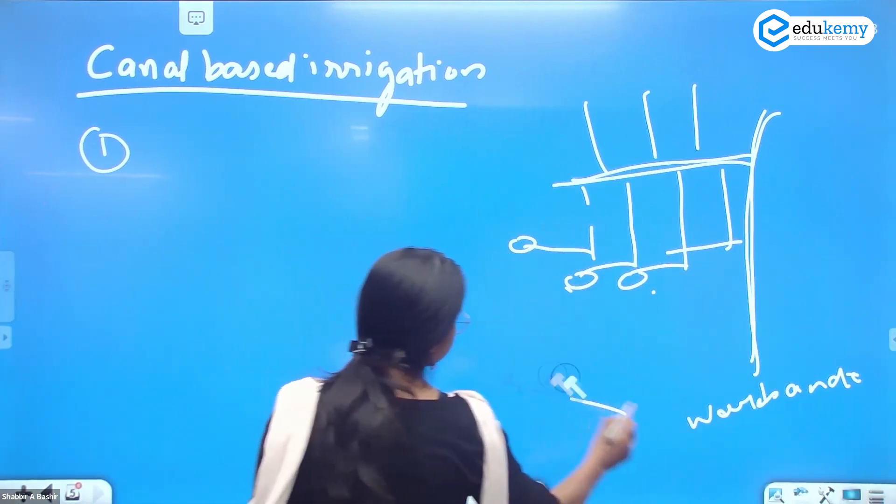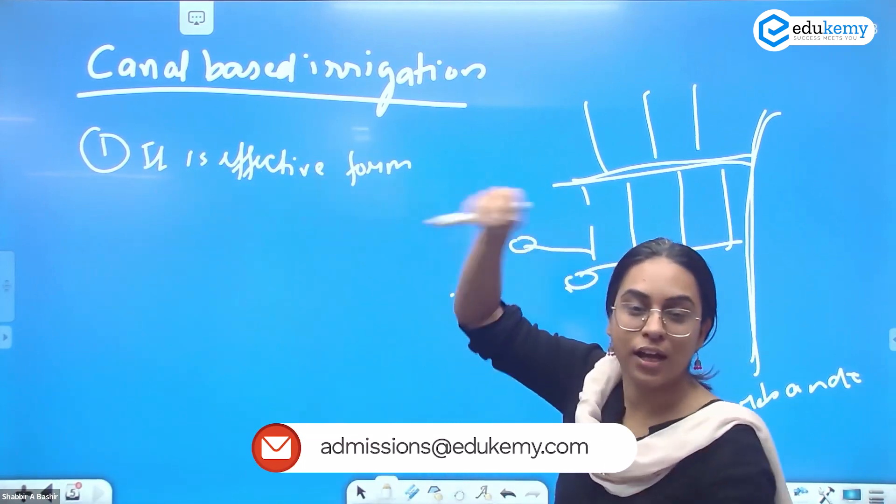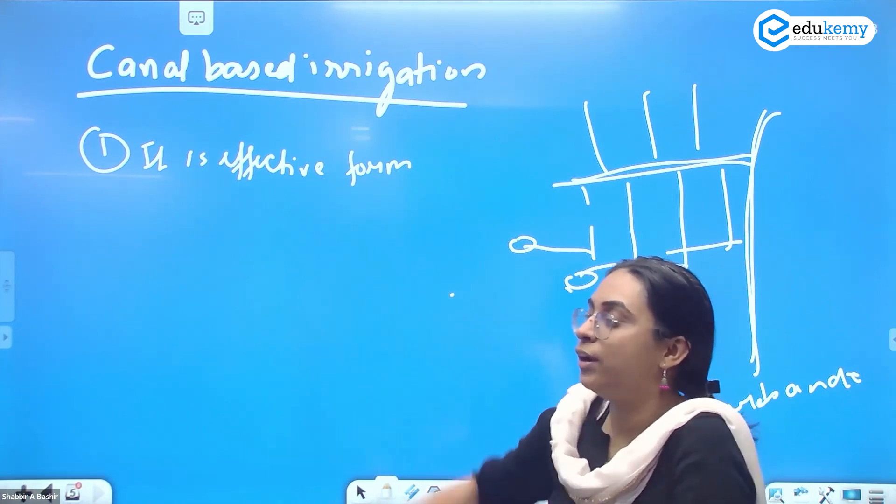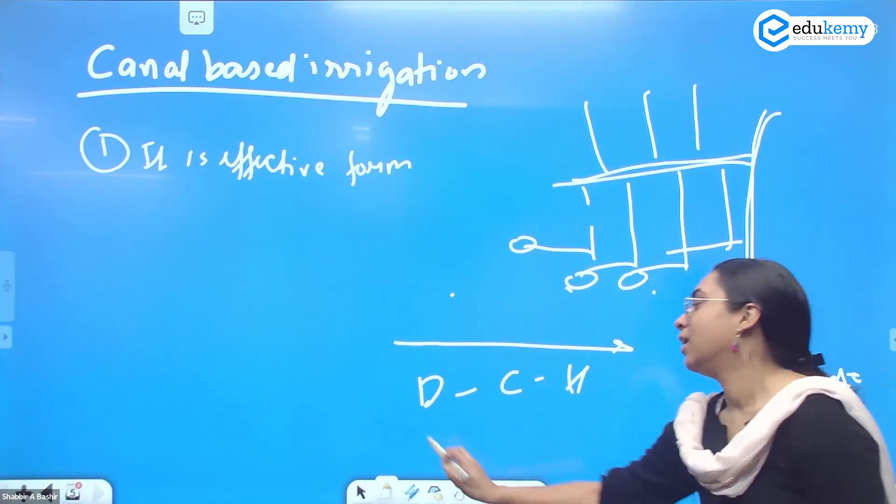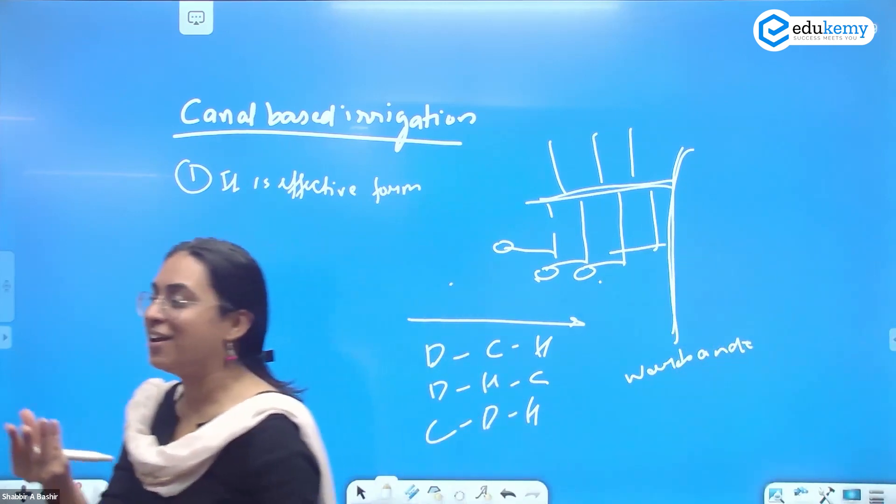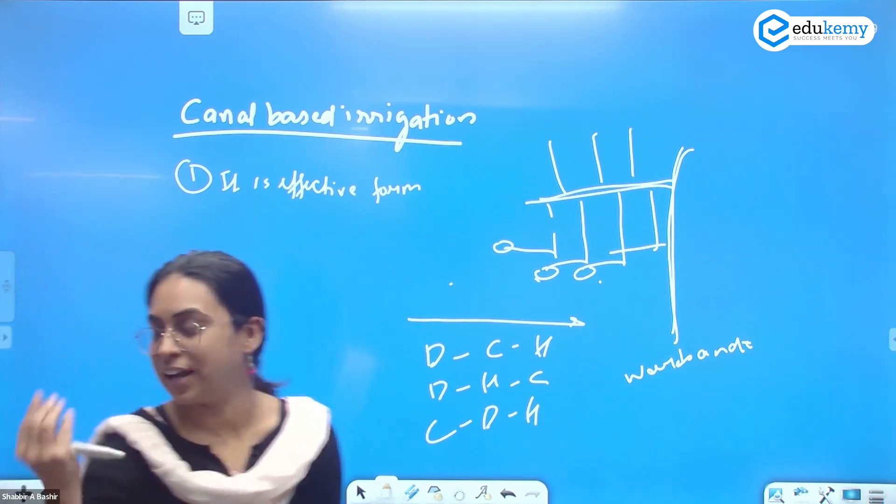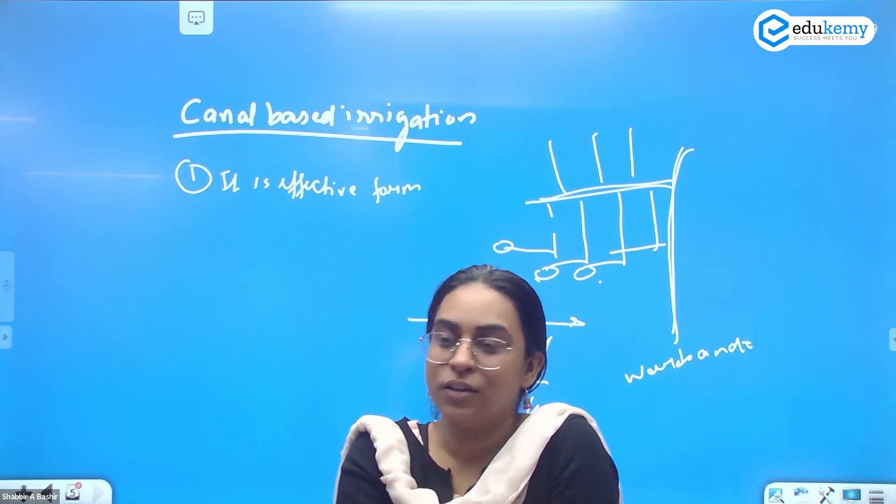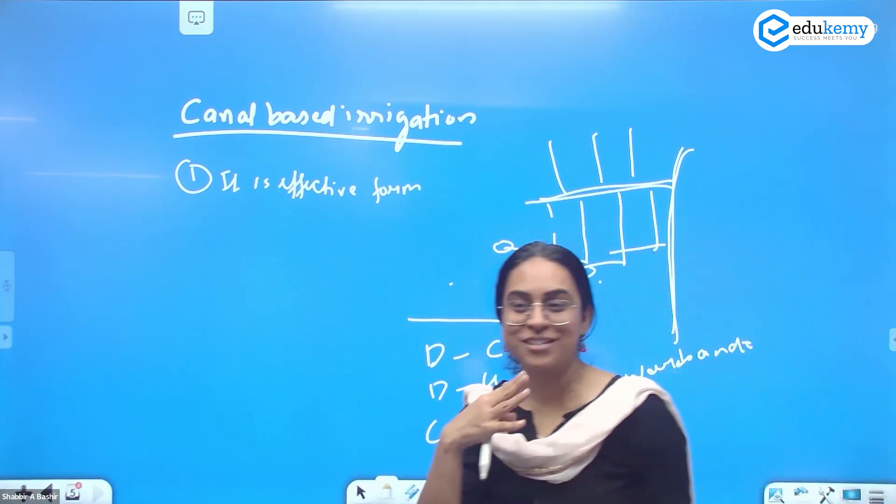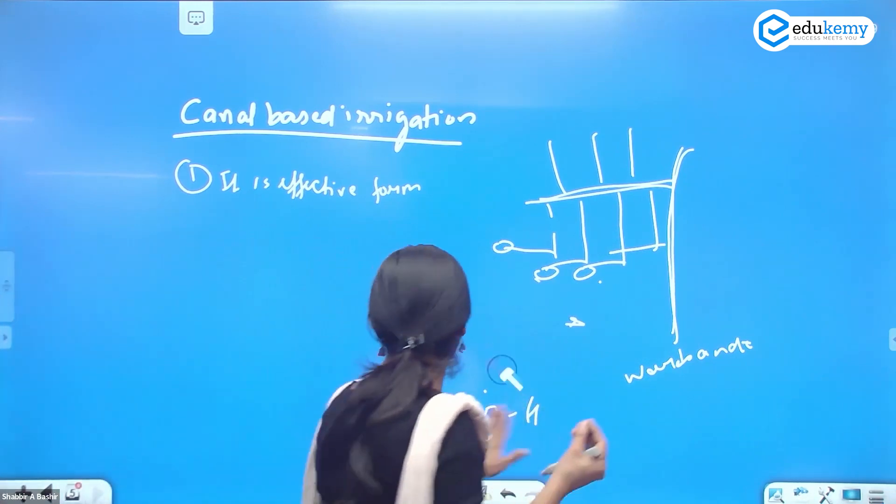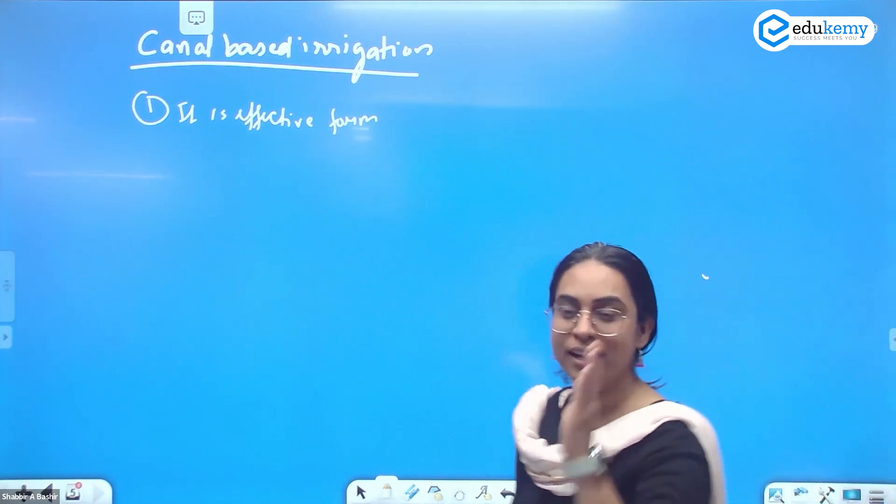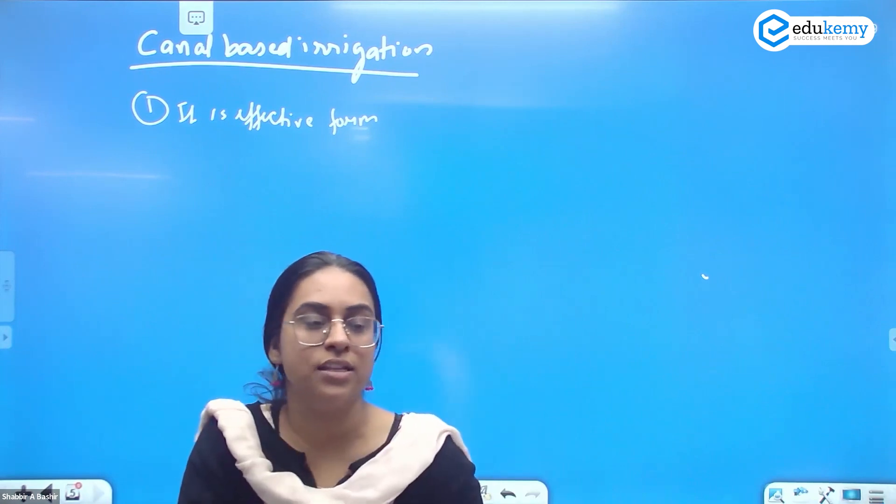Canal-based irrigation. There was a food chain question in prelims 2015 about diatom, crustacean and herring. They were asking to identify the correct food chain. Crustaceans are crabs and prawns with calcium crust. Herrings are fishes. Diatoms are planktons - you studied diatom in oceanography with foraminifera, coccolithophores, radiolaria. The answer was diatom, crustacean, and then herring. Diatom is plankton, crustacean is crab, and herring is fish.